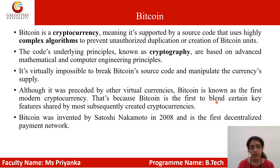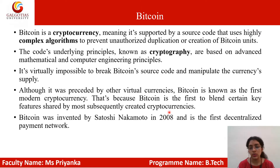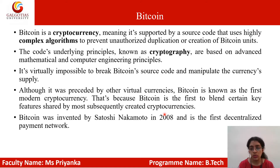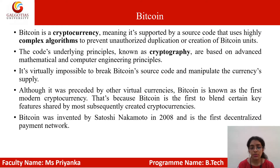Bitcoin is the first to blend certain key features that are shared by most subsequently created cryptocurrencies. Bitcoin was created in the year 2008 by Satoshi Nakamoto, who published his white paper in 2008. In 2009, it officially came to market for users to purchase. Bitcoin is the first decentralized payment network, because it is based on the concept of blockchain, which is a decentralized network.